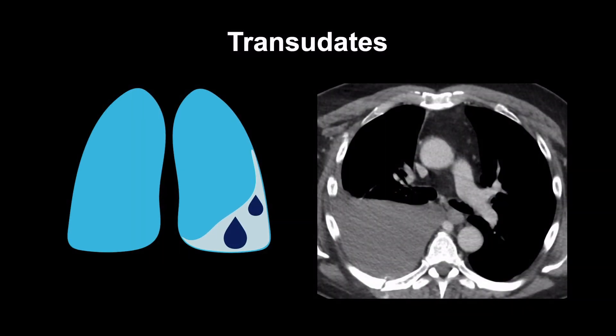Transudative fluids do not have cellular components, so they flow freely, layer-dependently in a crescent shape, and don't form loculations, which are fixed pockets in the pleural space bounded by fibroseptra. Because the pleura is normal and not thickened, it will not be visible.